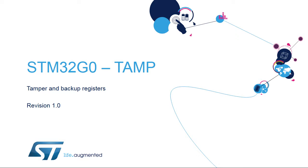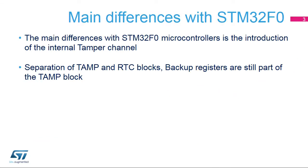Hello and welcome to this presentation of the STM32 Tamper and Backup Registers. It covers the main features of this peripheral, which is used to provide security against tamper events. In the STM32G0, two separate units are present: tamper detection peripheral and real-time clock, called TAMP and RTC.